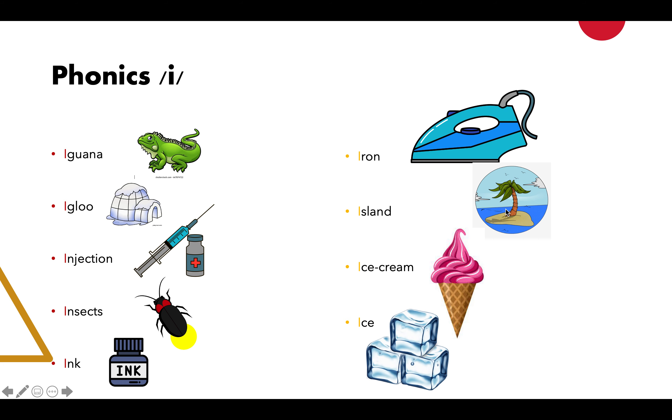So these are the words with phonics /i/. Actually there are two ways of pronouncing phonics /i/. We can pronounce it as /e/. Okay: iguana, igloo, injection, insects, ink. This is for phonics /i/ that we pronounce it like /e/.